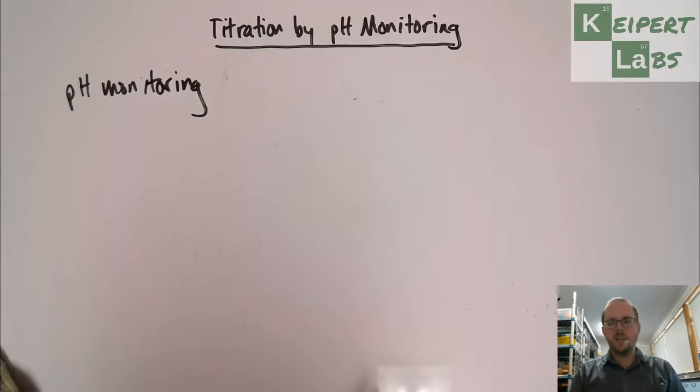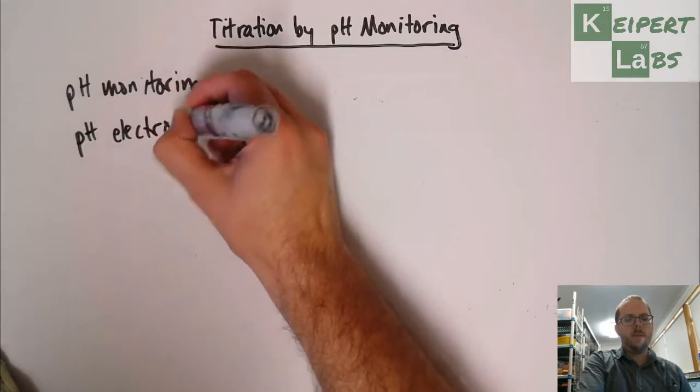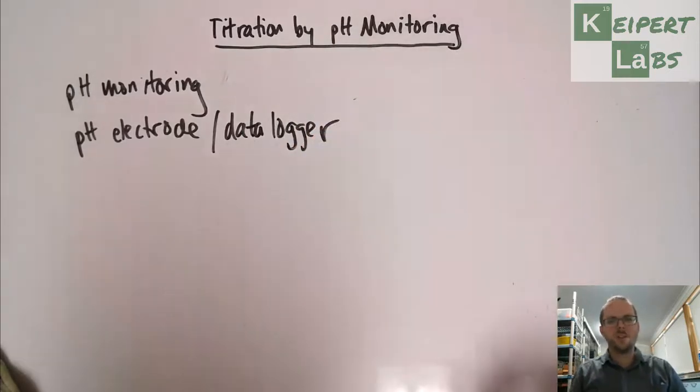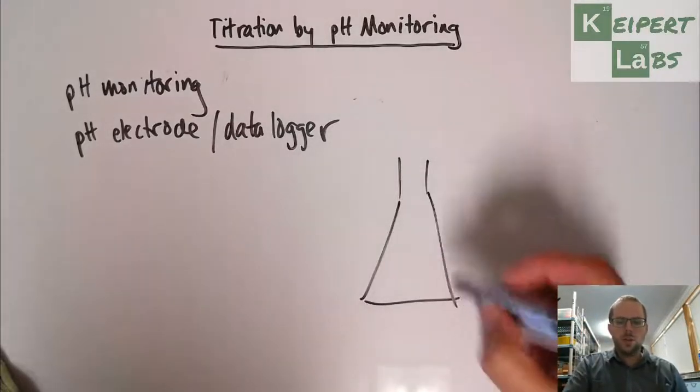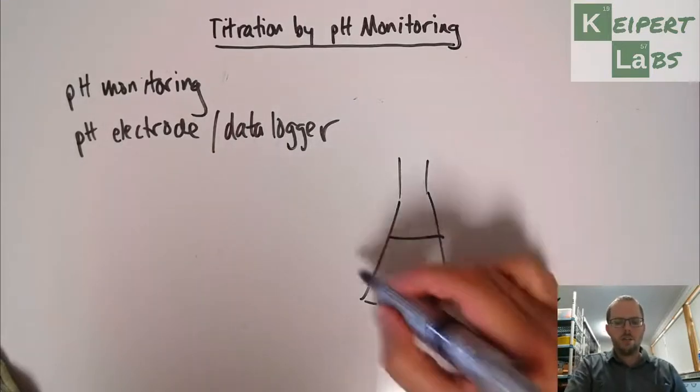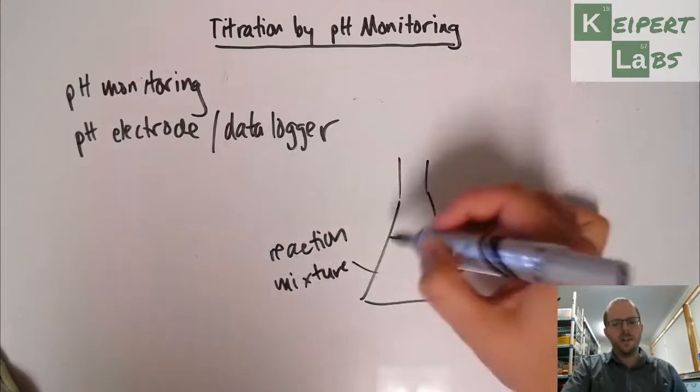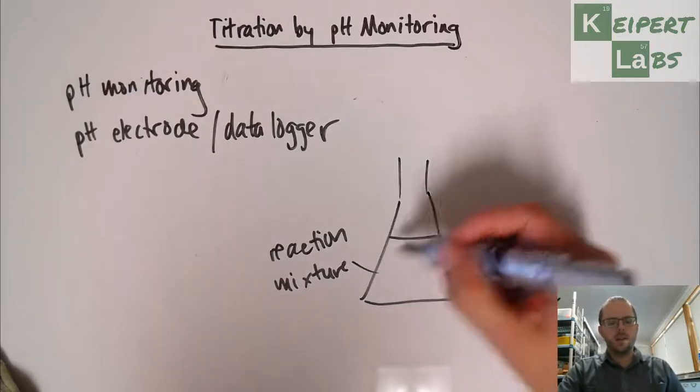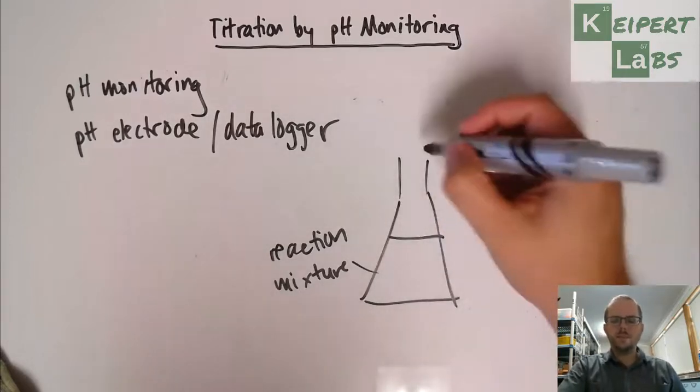When we're thinking about titration by pH monitoring, we are thinking about using a pH electrode, often coupled with a data logger, as a way for us to monitor the pH of the reaction mixture during the titration. So we would have our conical flask with our solution—this is our reaction mixture. It starts off as being 100% one reactant. As we add in the other from the burette, we're getting a combination of different things. When we get to the equivalence point, it's all the ions, the product, and then as we add more, we've reached an excess.